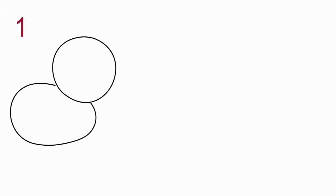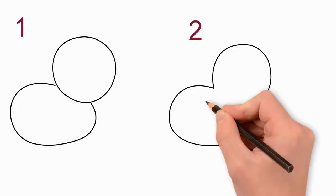One circle above the other. One circle will be the cat's head and the other circle will be the cat's body. Erase the extra line between the two circles.